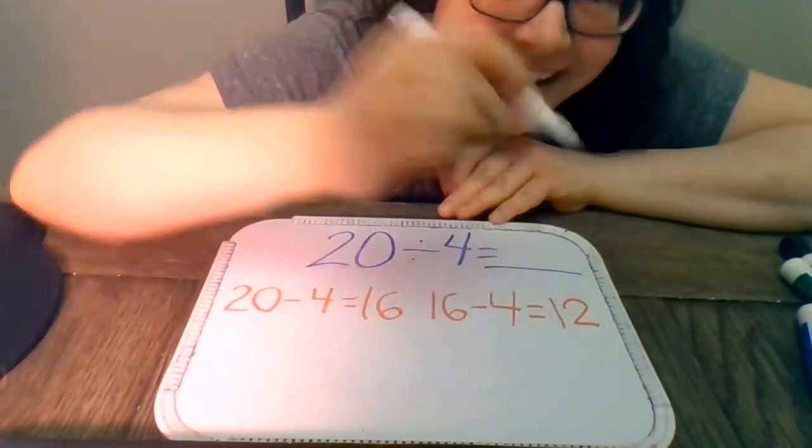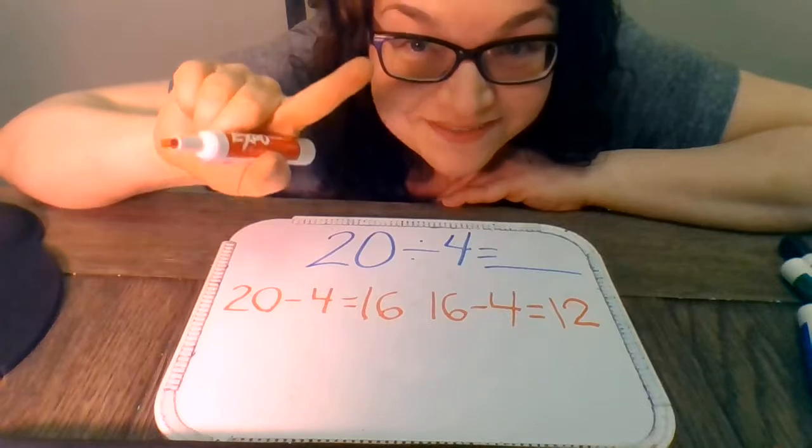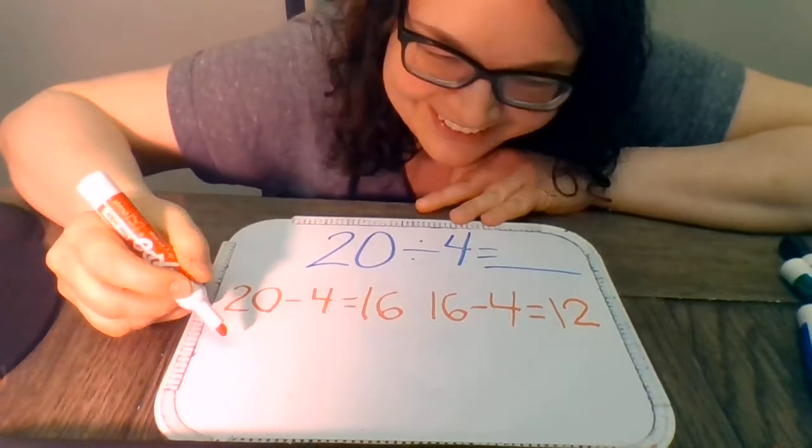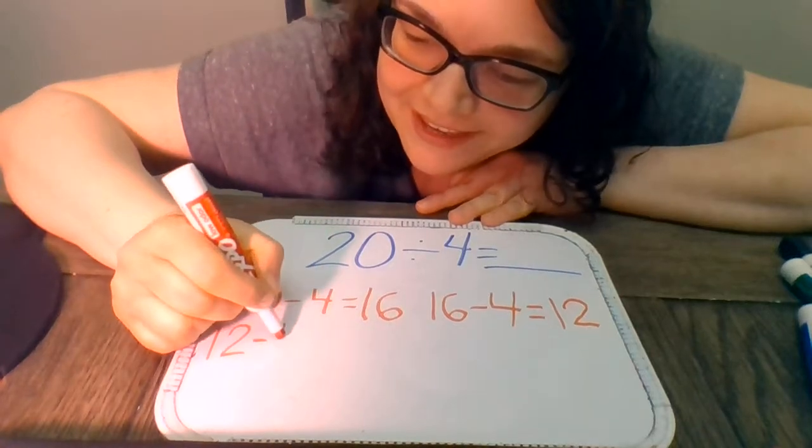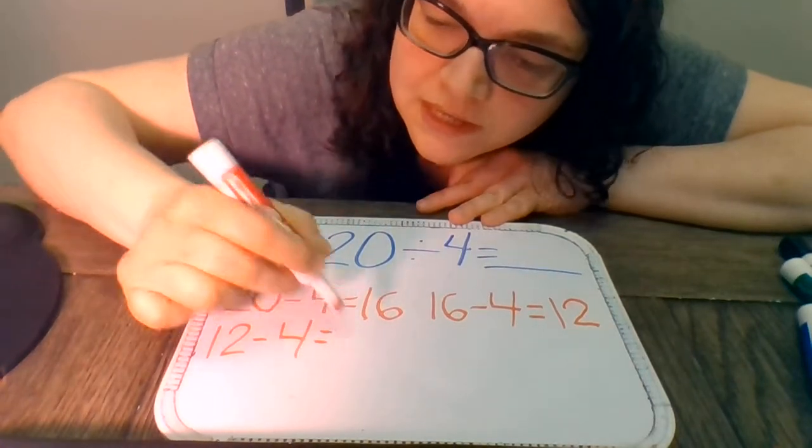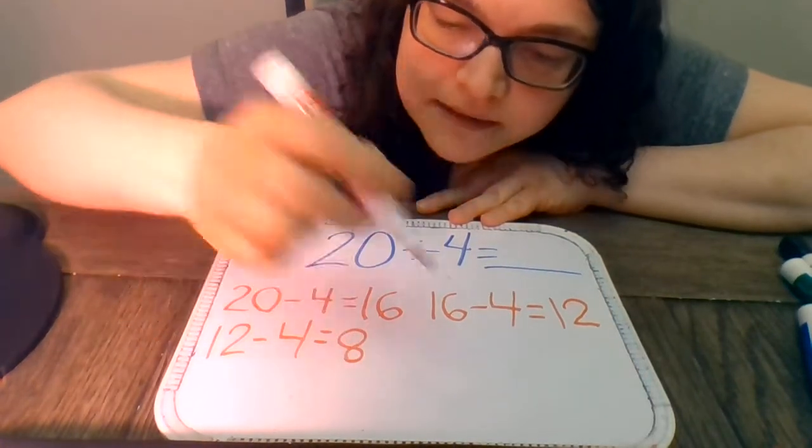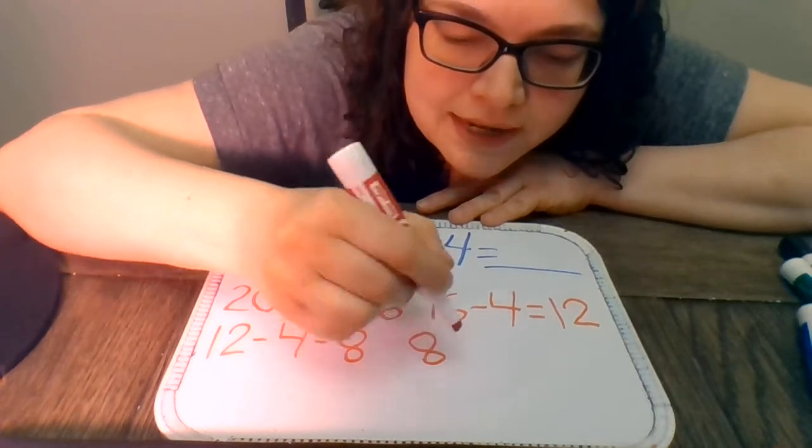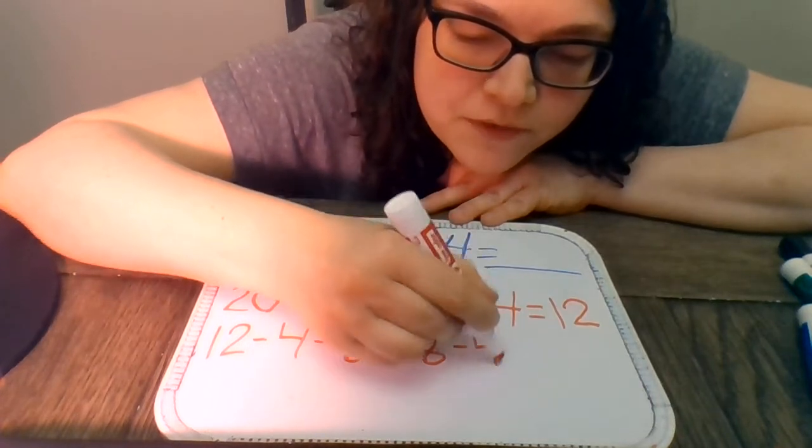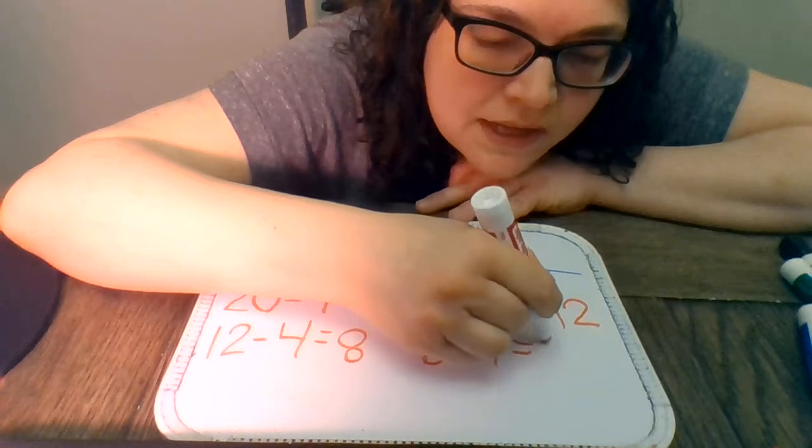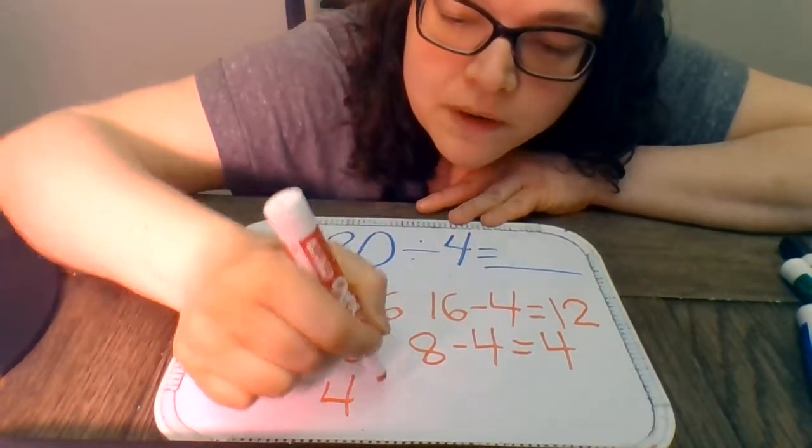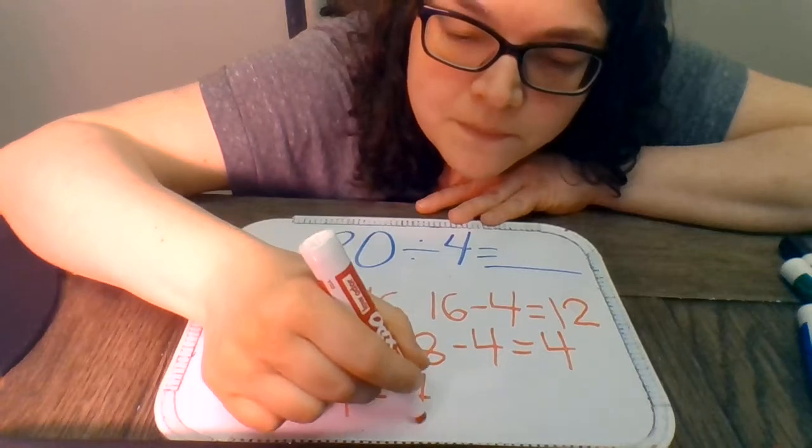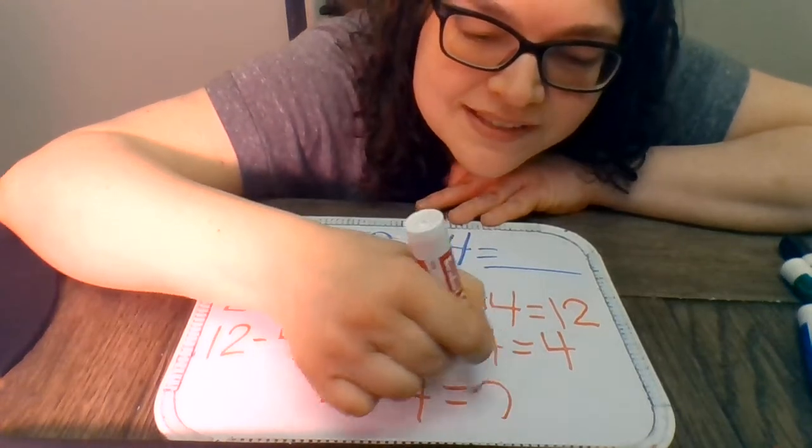There we go. Had to double check. It is hard to write upside down, just for the record. All right. 12 minus 4 again equals 8. 8 minus 4, if you remember your doubles, equals 4. And of course, 4 minus 4 equals 0.